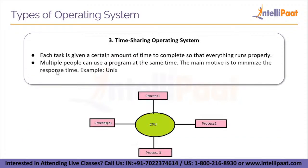The next type of operating system is the time-sharing operating system. In this type, each task is given a certain amount of time to complete so that everything runs properly. Multiple people can use a program at the same time. The main motive is to minimize response time, and the example for this type is the UNIX operating system. Nowadays, these types of operating systems are not widely used and have very few use cases.